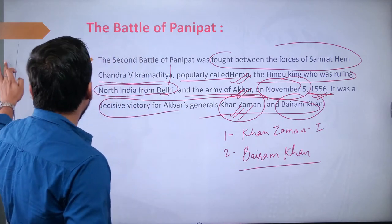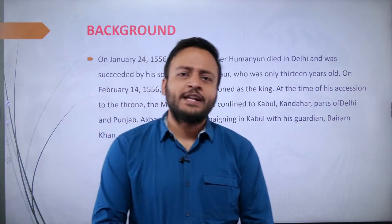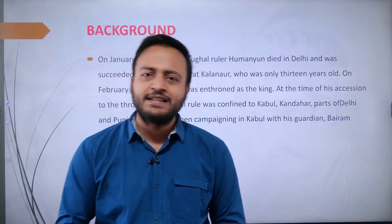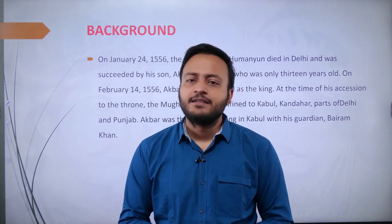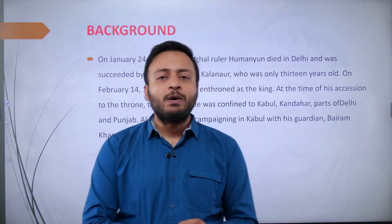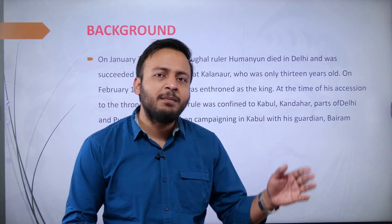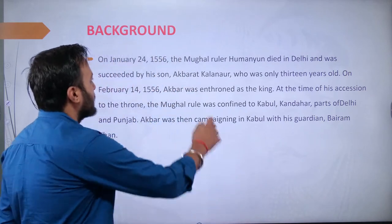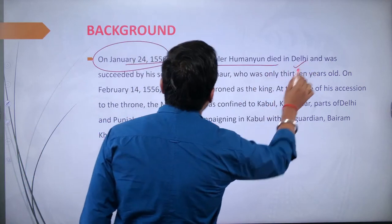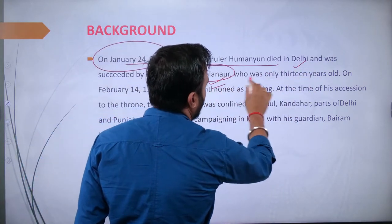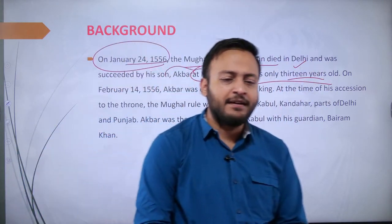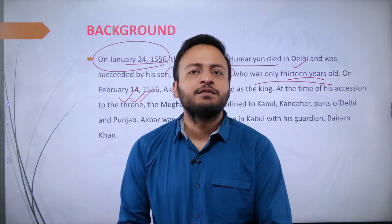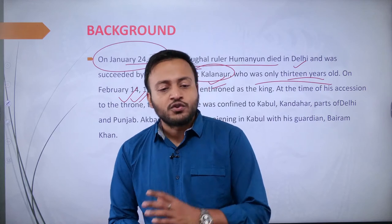As background to this battle: Humayun met with a tragic accident when he fell off the stairs of his library in Delhi and fell to his death. At that time, Akbar along with Bairam Khan were present at Kalanaur in Punjab. Humayun died on 24th January, and at that time Akbar was just 13 years old. On 14th February 1556, Akbar was enthroned as king of the Mughal empire.